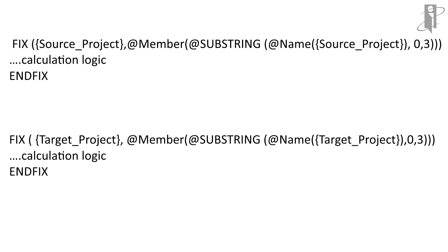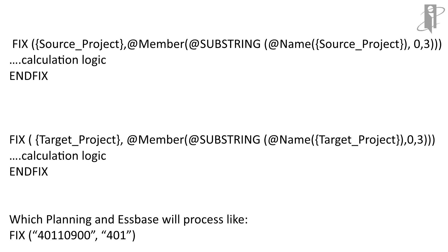Let's look at an example. In my fix statement, I'm fixing on source project — notice this is a runtime prompt variable that users are going to be prompted for in the business rule. So I have the fix on source project, and then with a comma, we're using the substring function. The first thing I have to do is use the @Name function to get the source project into a text string so that I can perform the substring function. Then I'm ready to use the substring function — I've got @Substring as the first parameter, and then I define the string itself, which is going to be the source project.